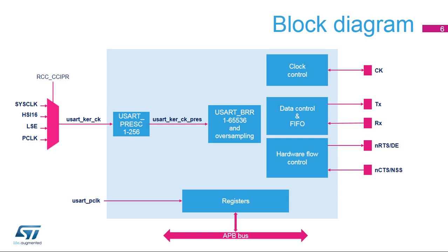TX and RX pins are used for data transmission and reception. NCTS and NRTS pins are used for RS232 hardware flow control. The driver-enable pin, which is available on the same I/O as NRTS, is used in RS485 mode. The clock output, named CK, is dual-purpose. When the USART is used in synchronous master-slave mode, the clock provided to the slave device is output and input on the CK pin.